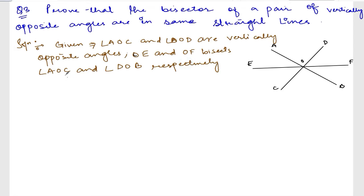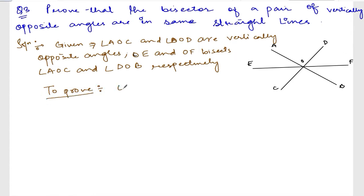This much we know. Now to prove: we need to prove that E, O, F is a straight line.